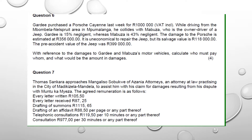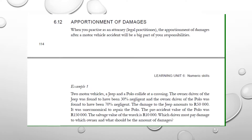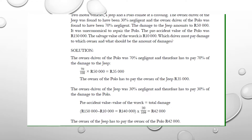When you look at page 114 of your study guide, you are going to find the apportionment of damages. This is where we are going to find guidelines on how to do the calculations. You can just do this on your own — it's a very simple one. You are going to see it when I do question 6.